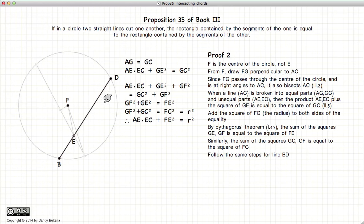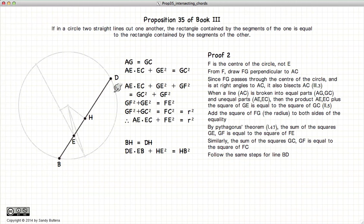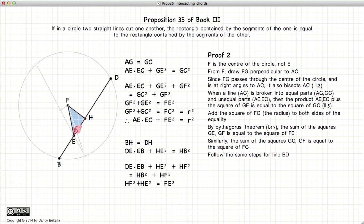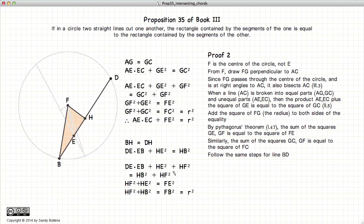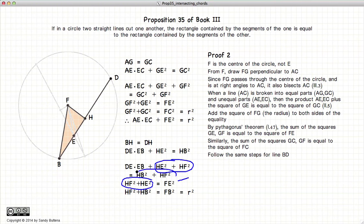Now we do the same thing for line BD. We draw line FH perpendicular to BD, so BH equals HD. We have that DE times EB plus HE squared equals HB squared. Drawing triangles again gives us HF squared plus HE squared equals FE squared. Adding HF squared to both sides and substituting, we get that HF squared plus HE squared equals FE squared, and HB squared equals R squared.